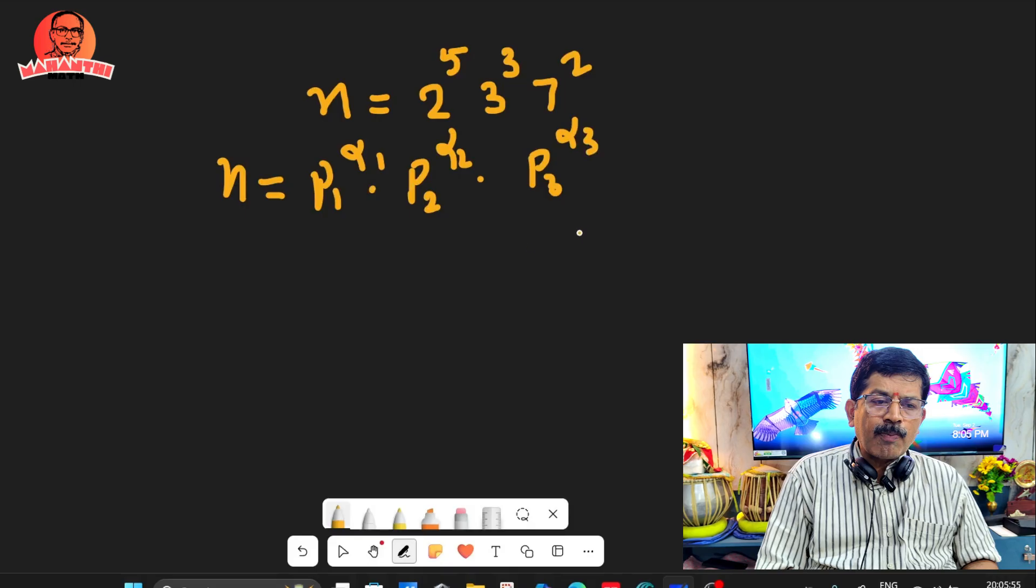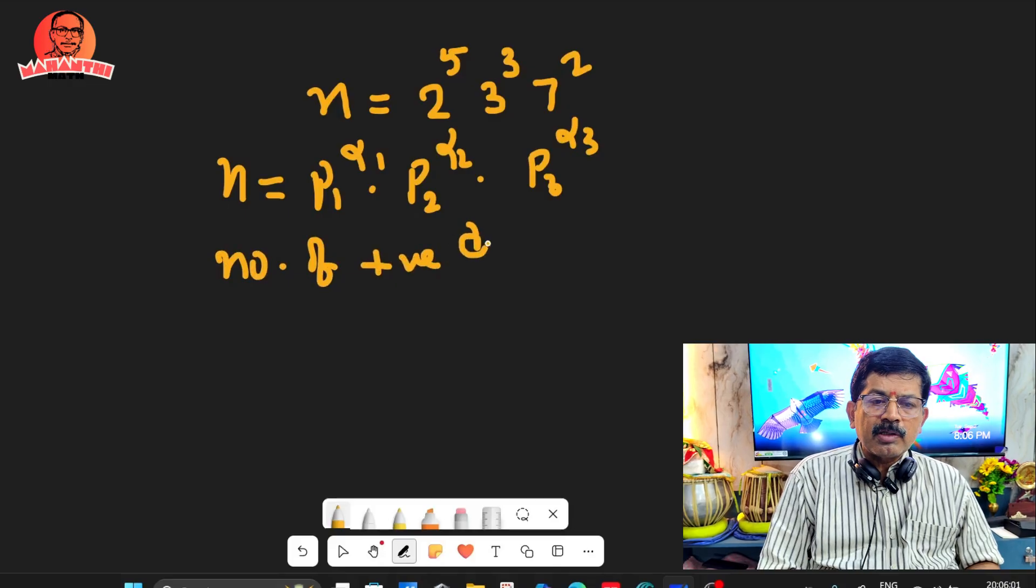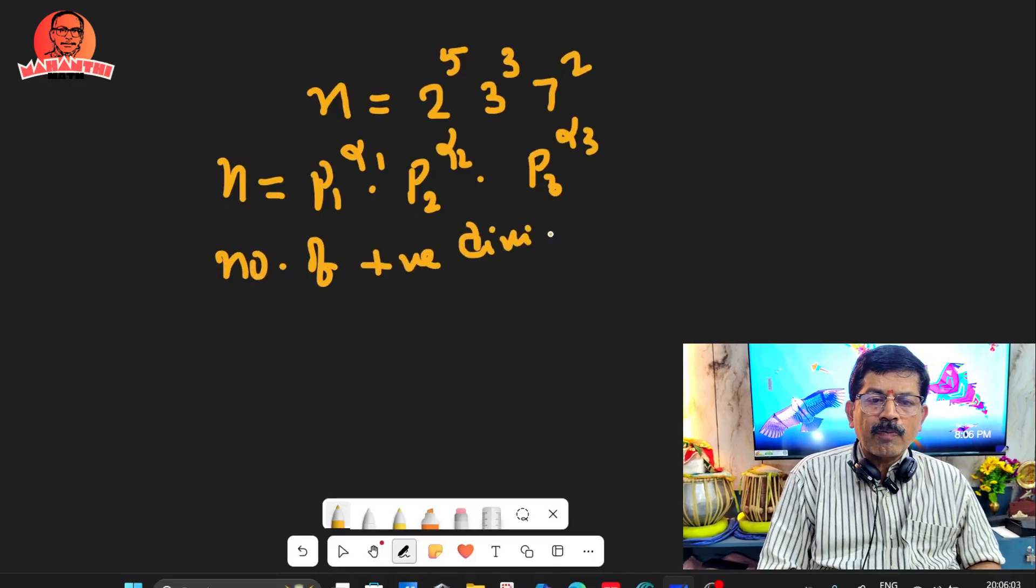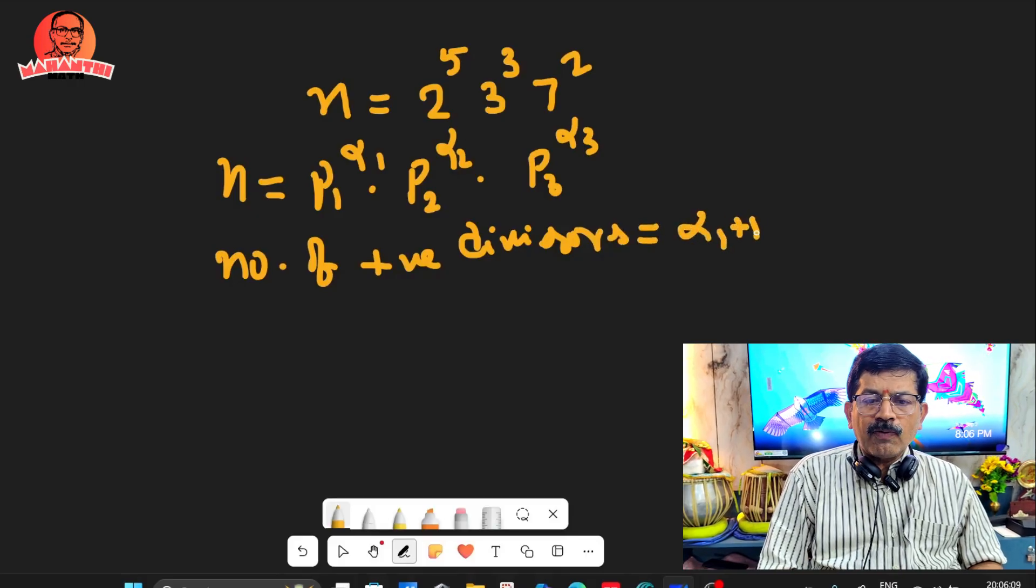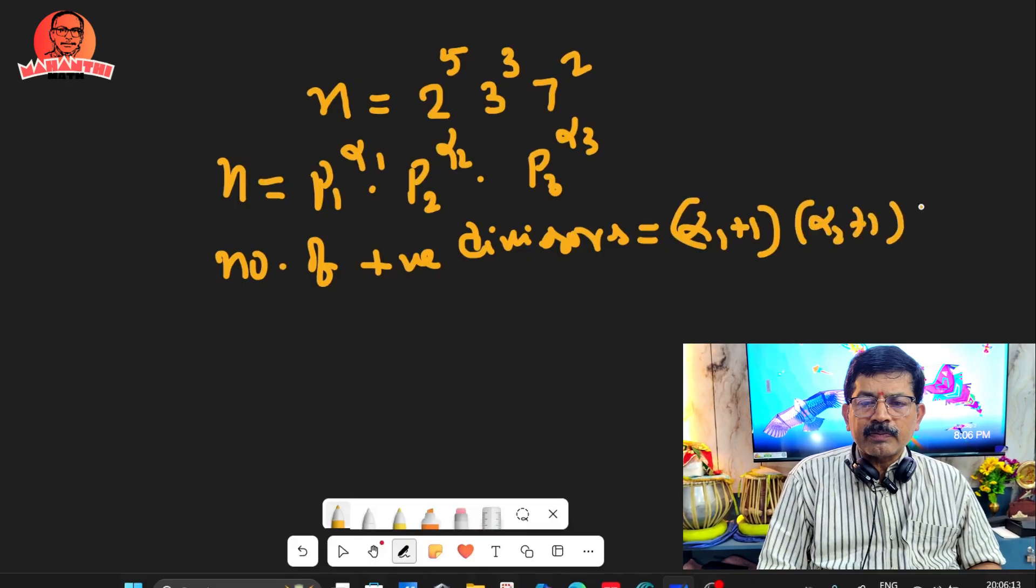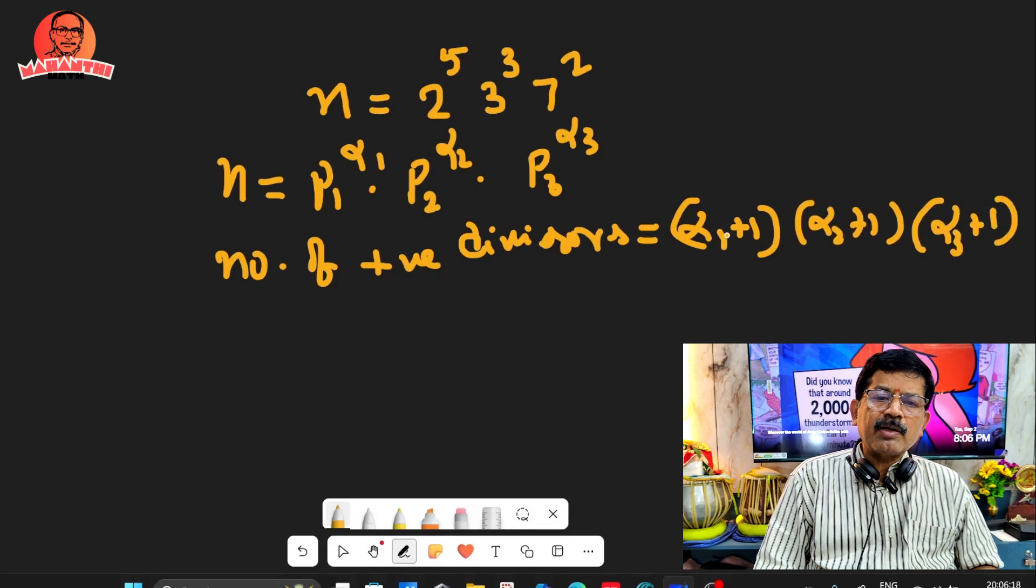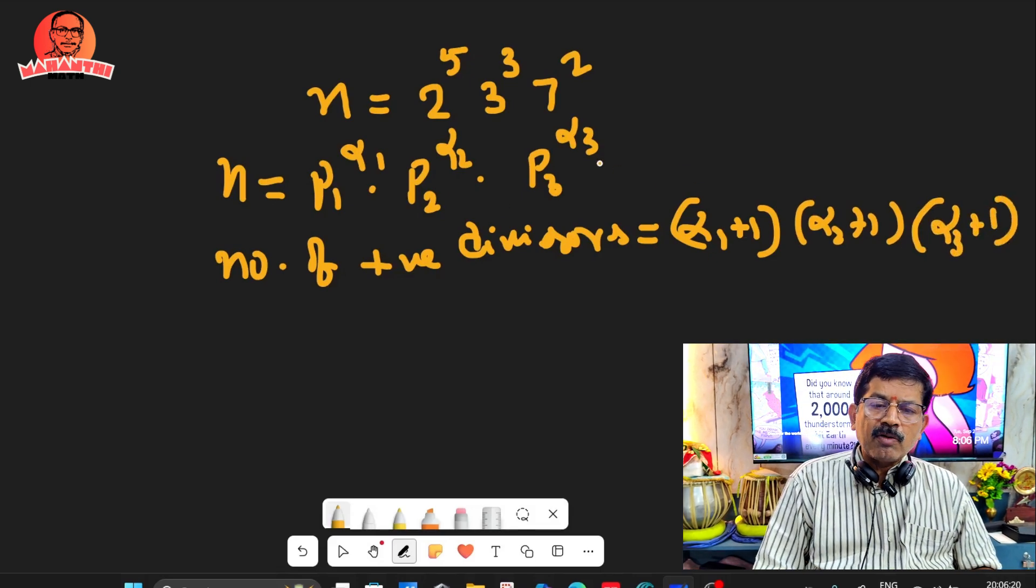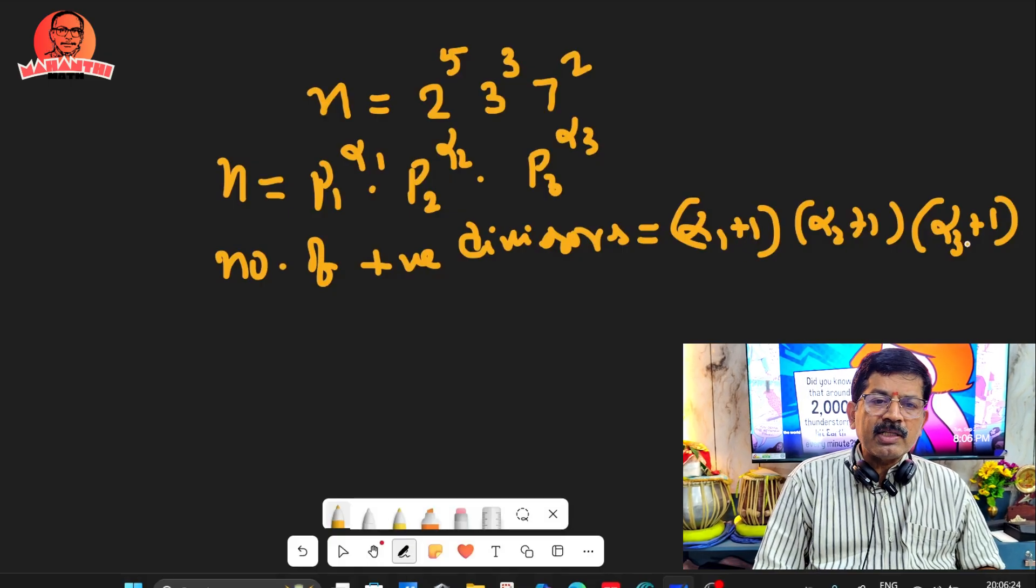Then the number of positive divisors equals alpha 1 plus 1, times alpha 2 plus 1, times alpha 3 plus 1, like that. However many prime numbers are there, that product - we have to increase the powers by 1 and multiply.